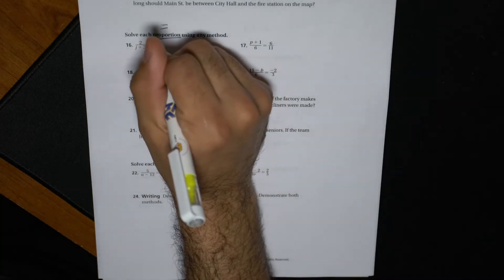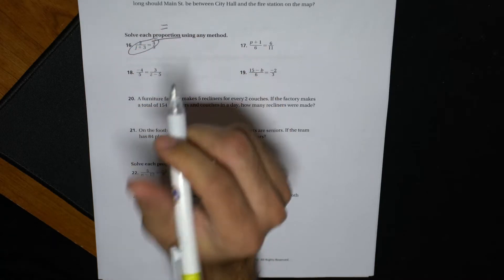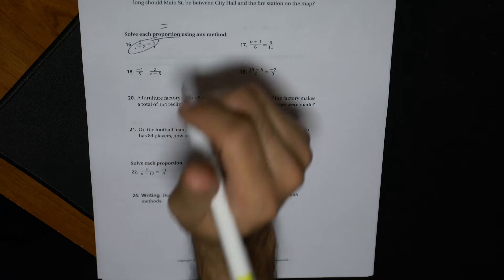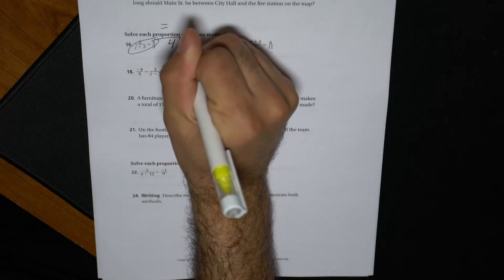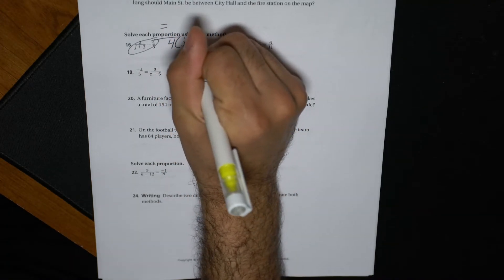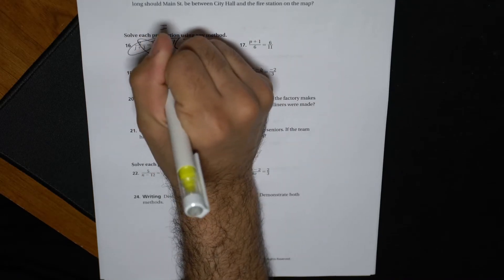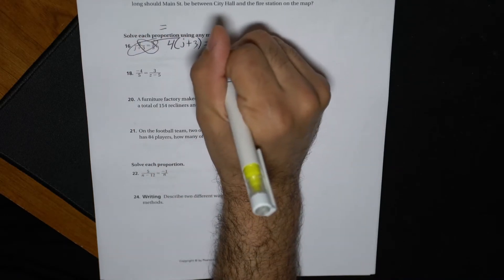So when I start doing my cross multiplication here, I have four times j plus three. What that means is I'm going to have four parentheses j plus three equals cross product of these two times five. So two times five is just 10.